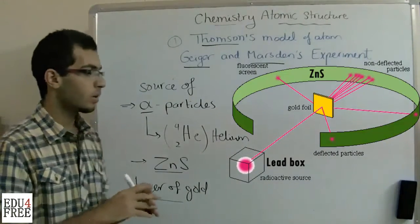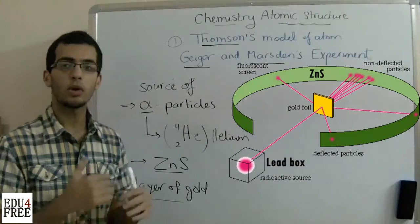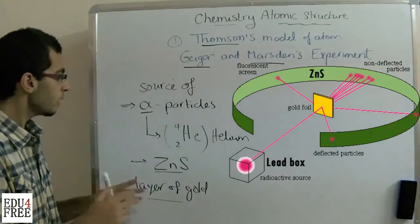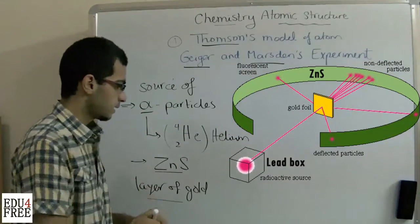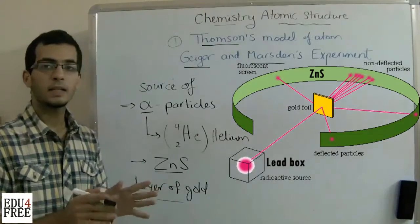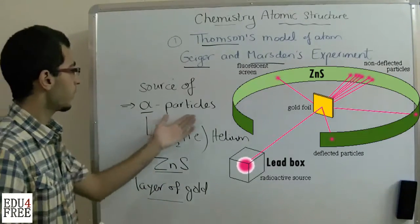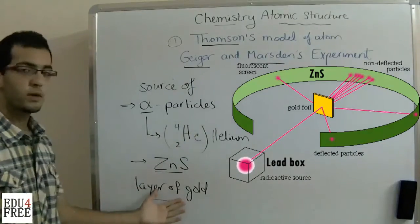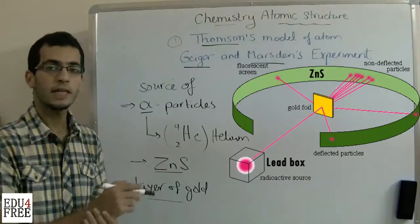And some glowing points were made that seemed deflected. So the alpha particles hit the layer of gold then they were deflected.